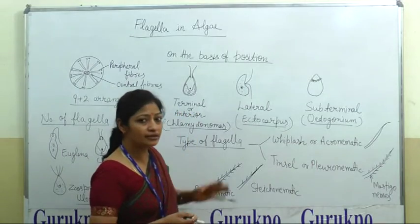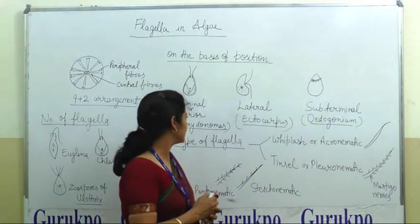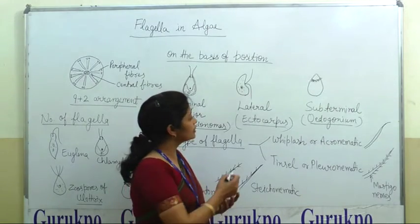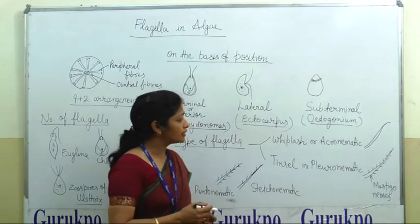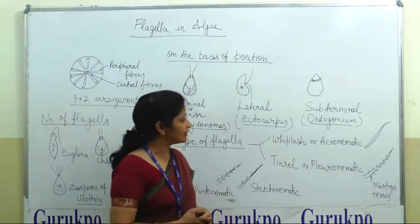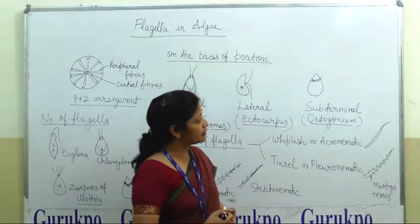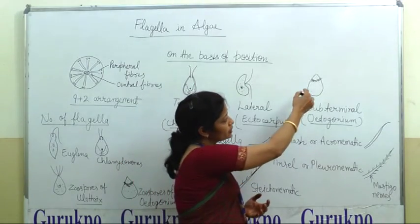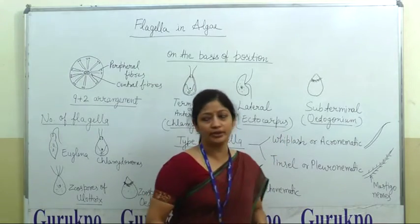Flagella present at the anterior end is called terminal or anterior flagella, and the example is Chlamydomonas. In the lateral type, the flagella are present on the lateral sides, and this type is found in Ectocarpus. In sub-terminal type, a large number of flagella are present below the terminal point, and the example is Udobur.